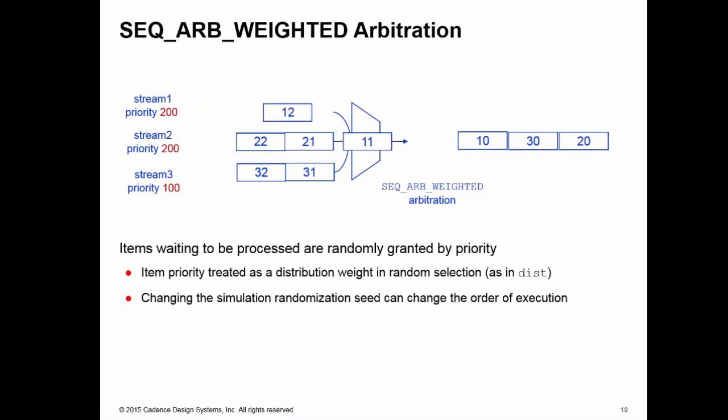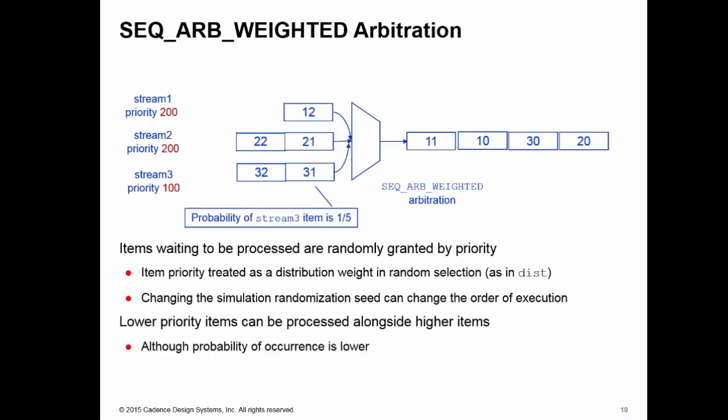We can randomly pick the items here. If you want to know the probability of an individual item, you sum up the weights of all items currently in the queue, then use the local weight of the item to determine its probability. So stream 3 item here has a probability of one fifth. Good news about this arbitration mechanism: you can process lower priority items, although the probability of their selection is much lower.